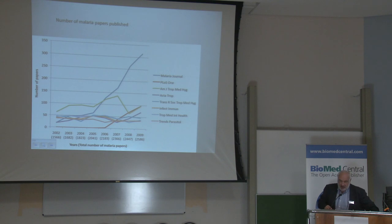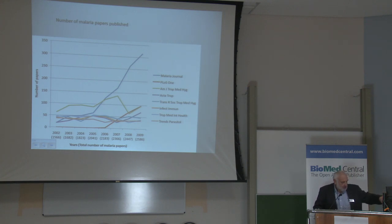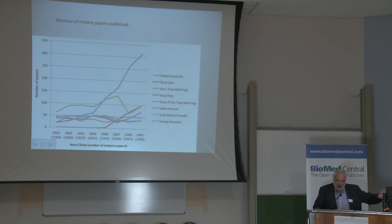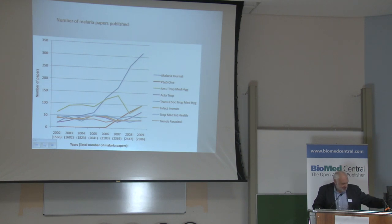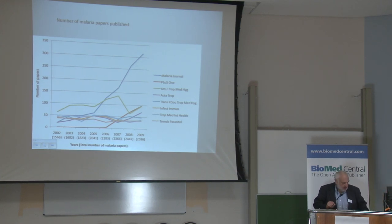In the follow-up survey we did in 2009, the blue line shows the increase in the number of papers published in Malaria Journal, which by 2009 was far above any other journal publishing on malaria. The traditional journals — particularly the American Journal of Tropical Medicine, shown in green — all remained pretty much the same throughout, staying around 100 articles per year. And in 2009, Malaria Journal had over 300.